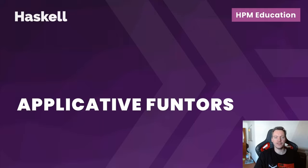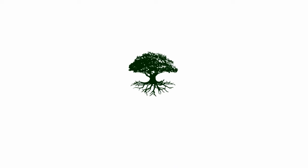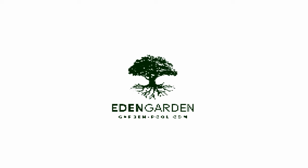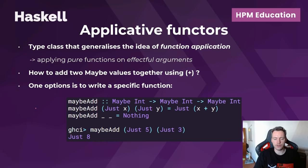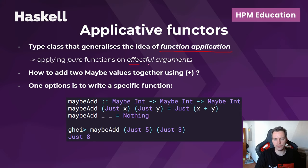Hello and welcome to the 11th part of the introduction to Haskell course. In this part we'll talk about applicative functors, which are also called just applicatives. Applicatives are also a type class, much like functors that we learned about in the previous video. Unlike functors that generalize the idea of function mapping, applicatives generalize the idea of function application — more specifically, they allow us to apply pure functions to effectful arguments, such as the Maybe type, the list type, or the IO type.